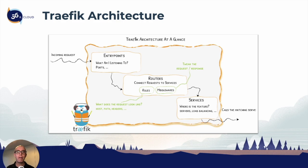All three levels of the traffic architecture — entry point, router, and service — we can define all of these, and we can do that through labels for routing and services with dynamic configuration.